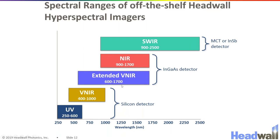There are also extended VNIR and NIR sensors that go out to 1700 nanometers using InGaAs detectors, and finally shortwave infrared sensors, or SWIR sensors, that cover 900 to 2500 nanometers and currently all use MCT detectors.